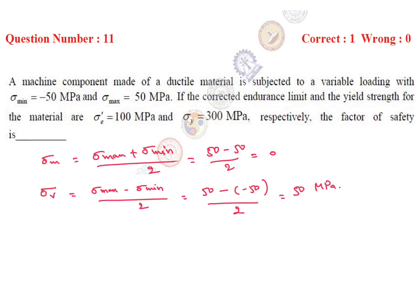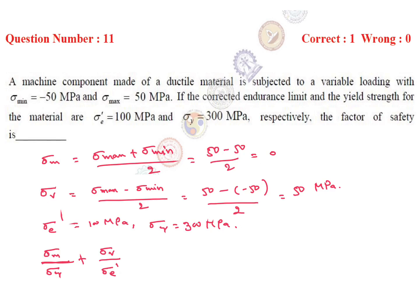Given: corrected endurance limit is 100 MPa, yield strength is 300 MPa. We have to calculate the factor of safety. Our formula is: sigma mean divided by sigma yield plus sigma variable divided by corrected endurance limit equals 1 by factor of safety. So put the values.